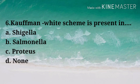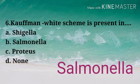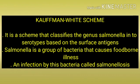Question: The Kauffmann-White scheme is used for — Options: A) Shigella, B) Salmonella, C) Proteus, D) None. Correct answer: Option B — Salmonella. The Kauffmann-White scheme classifies the genus Salmonella into serotypes based on surface antigens. Salmonella is a group of bacteria that causes foodborne illness; an infection by this bacteria is called Salmonellosis.